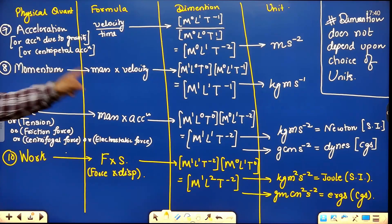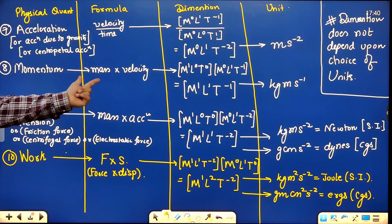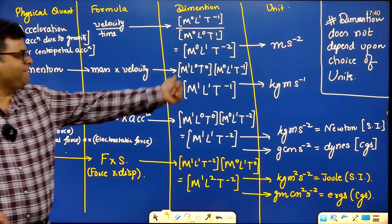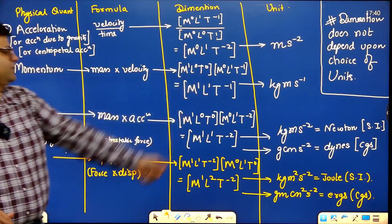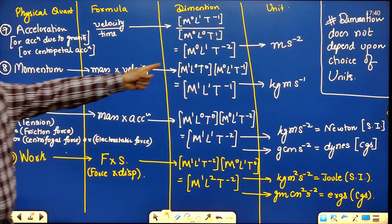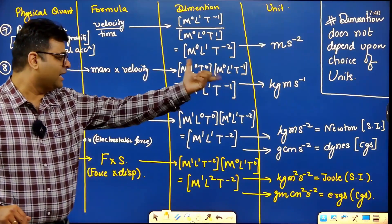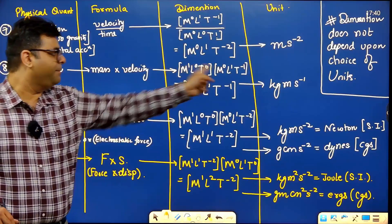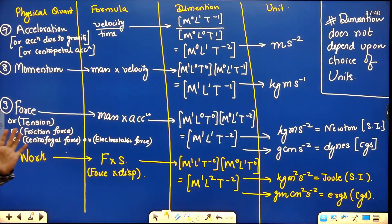Similarly, momentum is mass × velocity. Mass is M¹L⁰T⁰, velocity is M⁰L¹T⁻¹. Combine by adding powers with same base: momentum dimensions become M¹L¹T⁻¹. These are the dimensions of momentum.